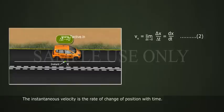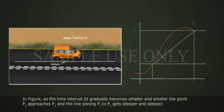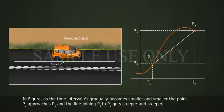The instantaneous velocity is a rate of change of position with time. In figure, as a time interval, delta t gradually becomes smaller and smaller, the point p2 approaches p1,